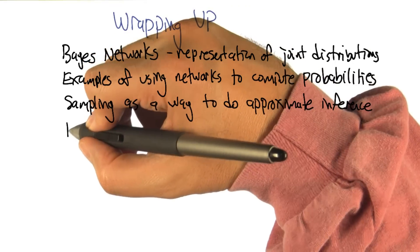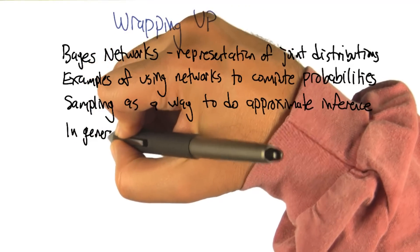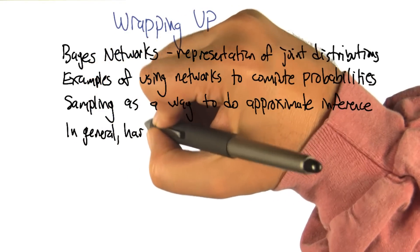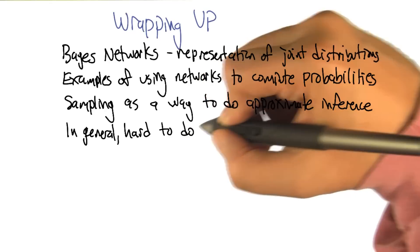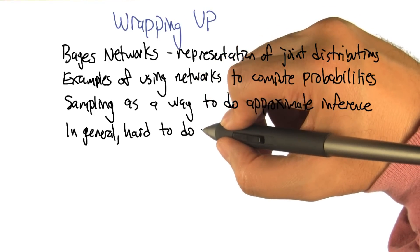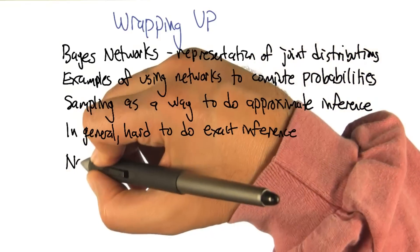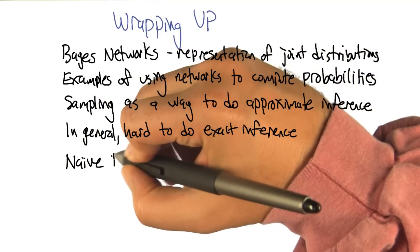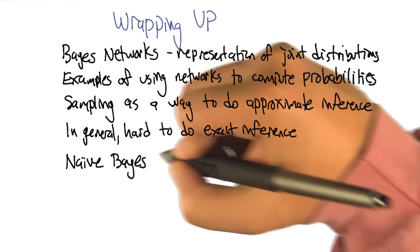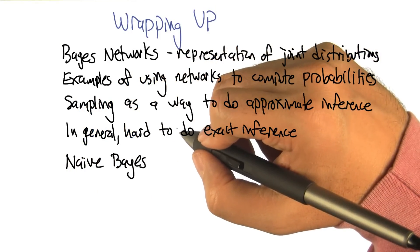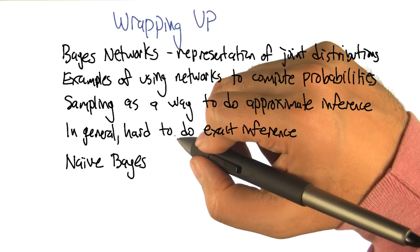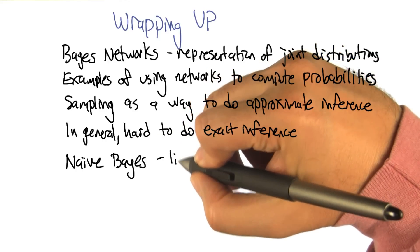And then we did naive Bayes. Well, first we did say that in general, it's hard to do exact inference. It's actually hard to do even approximate inference. But we talked about a special case of Bayesian networks that was called naive Bayes, with the naive part being that we're assuming that attributes are independent of one another, conditioned on the label.